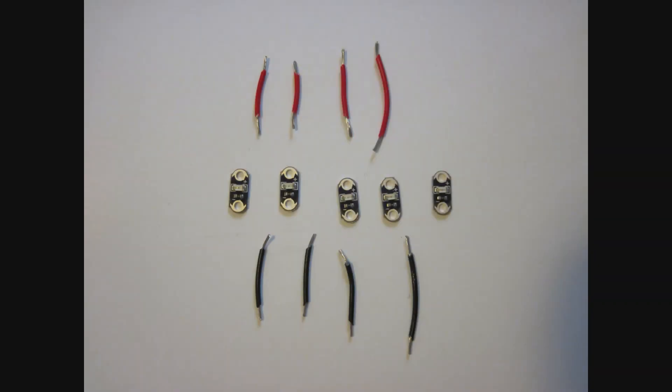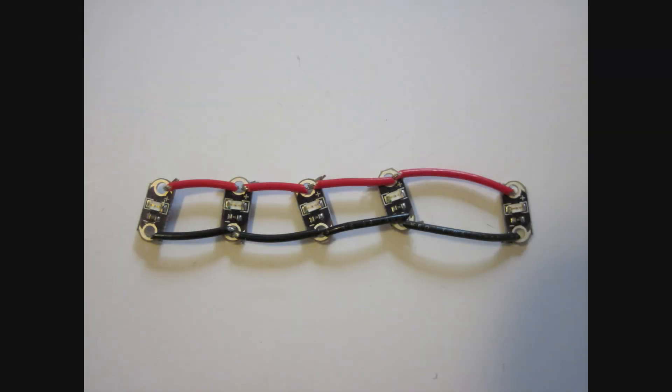The first step is you're going to use your wire strippers to cut four segments each of red and black wire. The exact size will depend on the size of your glove and how far apart you want your LEDs. You're going to use those wires to wire together all the positive and all the negative terminals of your five red LEDs and your five green LEDs.